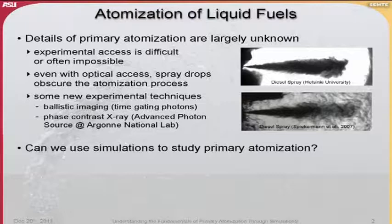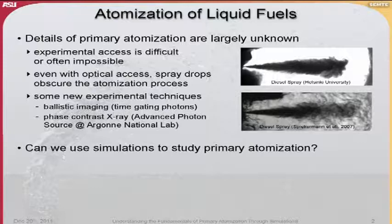There have been some new experimental techniques that try to achieve this, among them ballistic imaging, where you use time gating of photons, or phase contrast X-rays done at Argonne National Lab. So there are some techniques coming online nowadays to probe the primary atomization region. The trouble is that most of these techniques cannot yet give you the full time sequence of data.